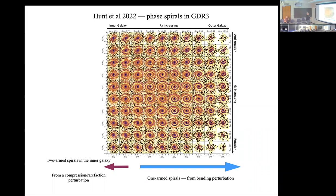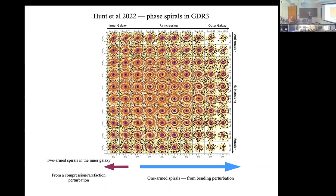People have now studied the spirals in great detail. This montage was created by Jason Hunt and company with Gaia DR3, mapping the Gaia spiral from the inner galaxy to the outer galaxy and as a function of galactic azimuth. One interesting finding is that in the inner part one has two-arm spirals and in the outer part one-arm spirals. The one-arm spirals come from a kick-type perturbation; the two-arm spirals come if you imagine squeezing the distribution function in position or velocity — that's a breathing perturbation — while the one-arm case is a bending of the disc.